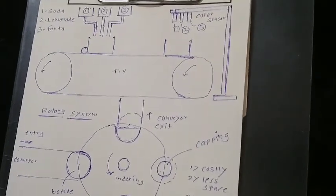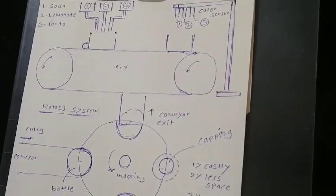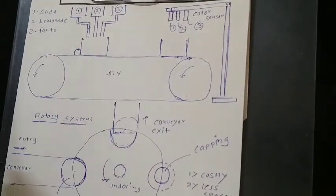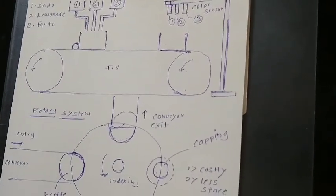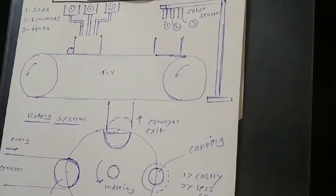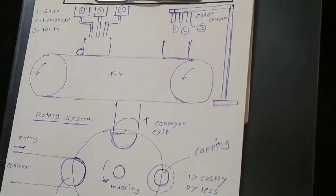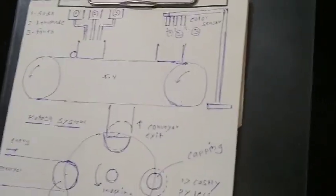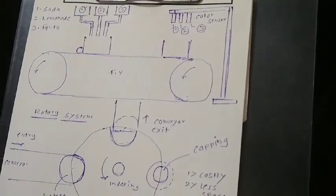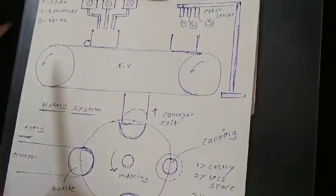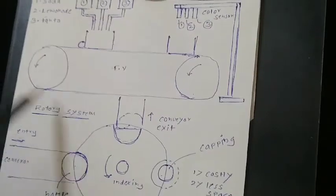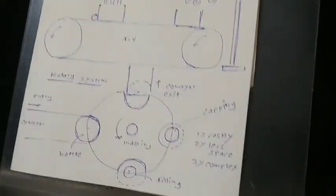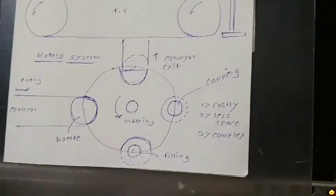Once the container is filled, the drain valve closes, that signal goes to the actuator, it retracts, and the filled container moves forward. It can be picked up manually, by a robotic arm, or pushed to another conveyor for packing. Packing is also possible here with an extension, but that is not the scope of what we want to discuss — we want to discuss only up to the filling station.